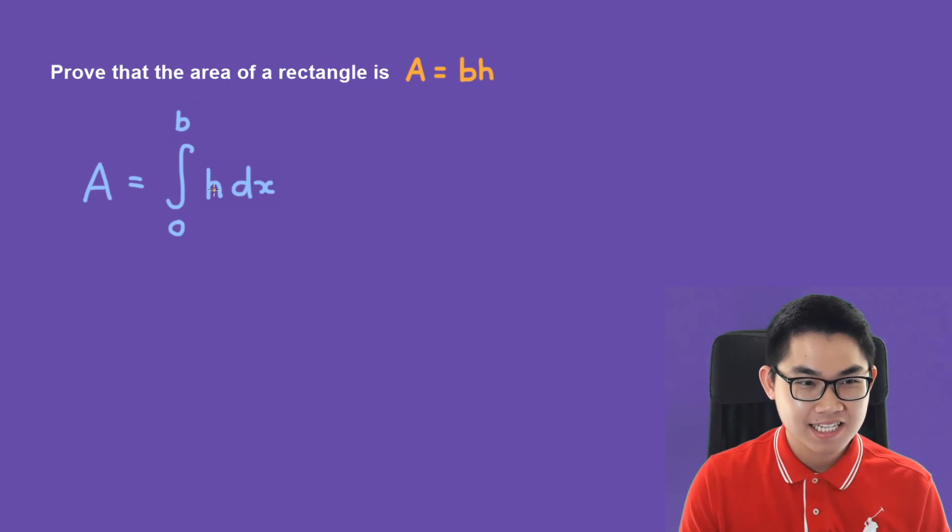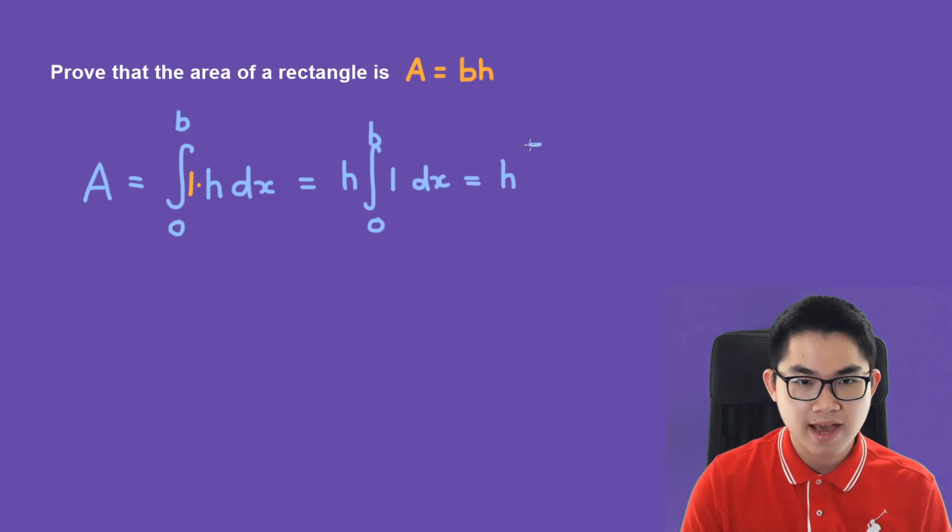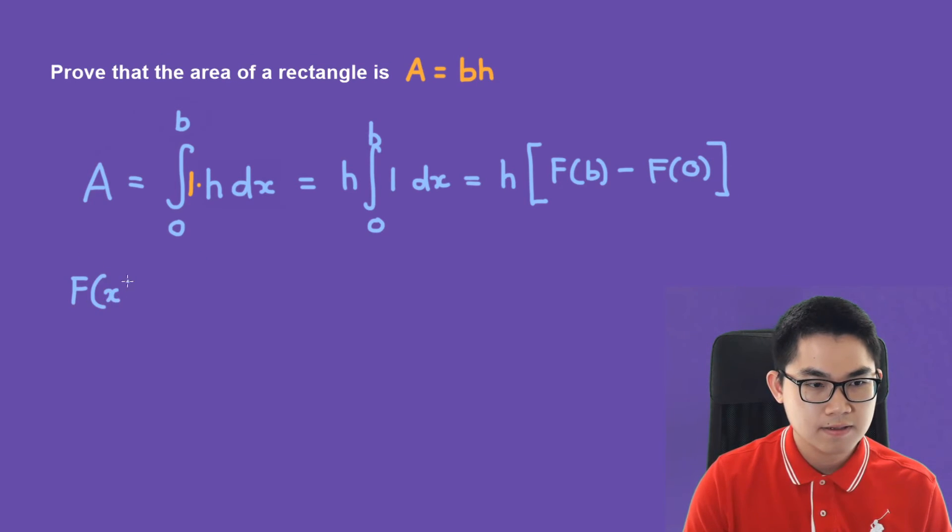You can think of this as 1 times h. Because h is a constant, we can move it outside the integral. We have h times the integral from 0 to b of 1 dx. Using the fundamental theorem of calculus, we have F(b) minus F(0), where F(x) is the indefinite integral. The anti-derivative of 1 dx is x plus c.